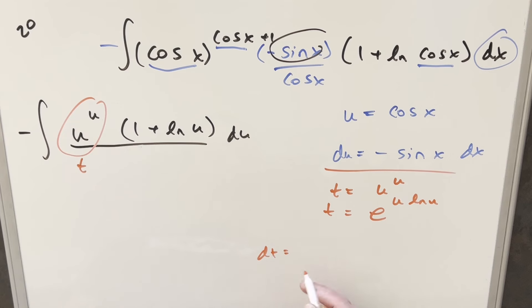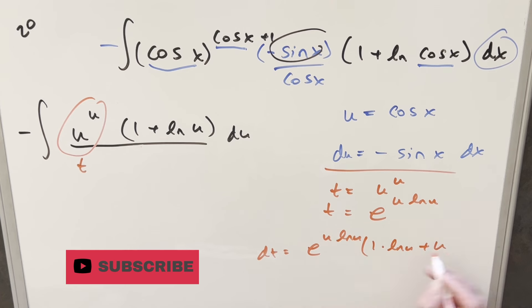And then if I take a derivative down here, first we get back all this. So we have e to the u ln u. Then we need chain rule on it. So derivative of u is just like 1 times ln u. And then for the second part, we bring over the u. Derivative of ln u is 1 over u.